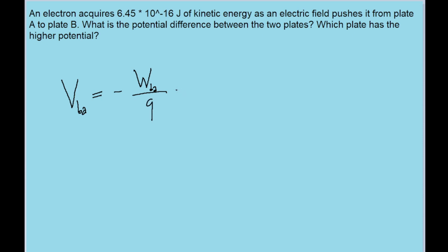Now let's just use this equation and plug in our values. It says that the particle has acquired 6.45 times 10 to the power of negative 16 joules of kinetic energy, and that's equal to the amount of work done on it.